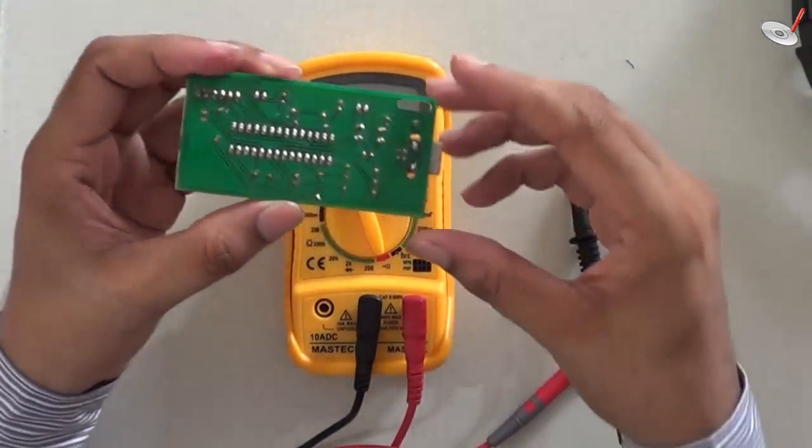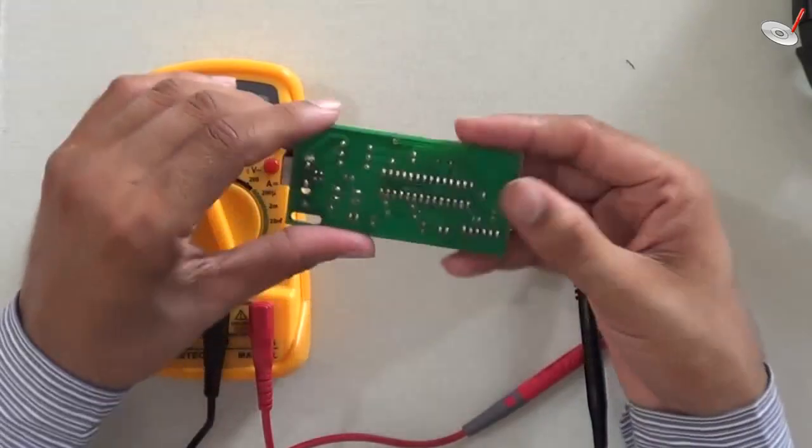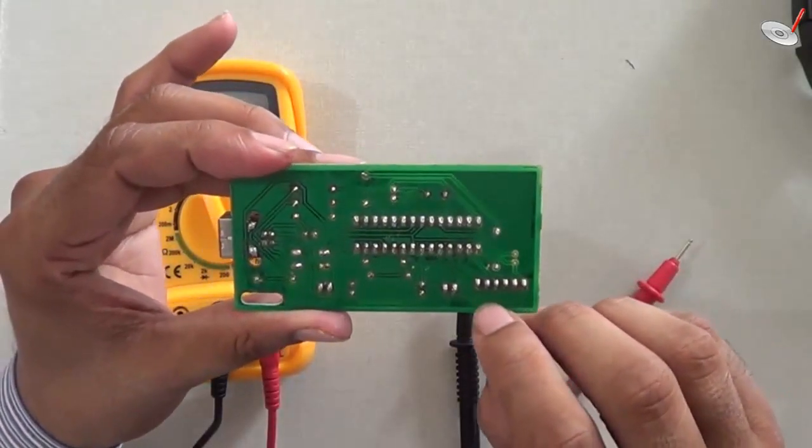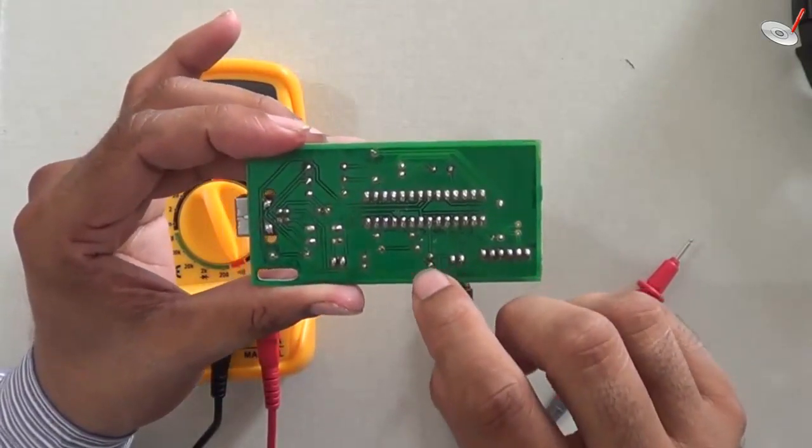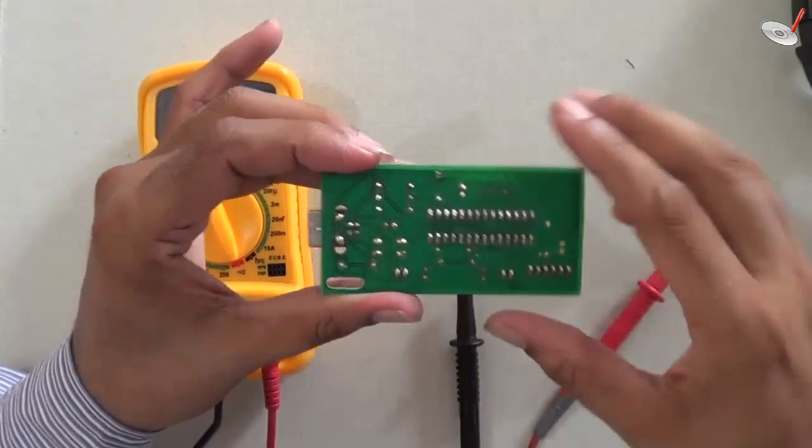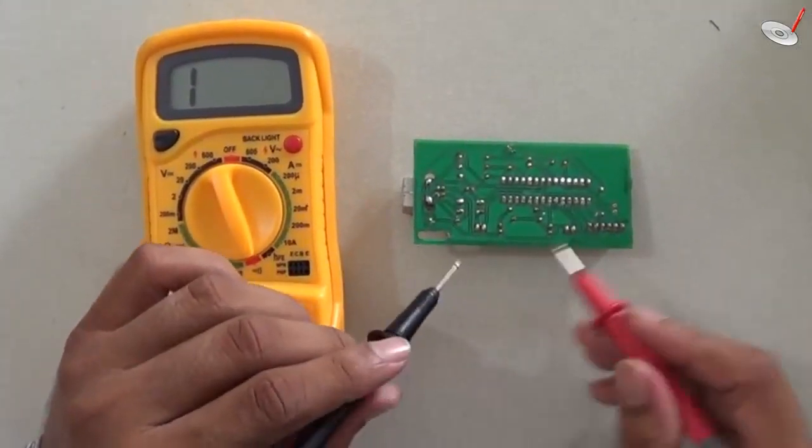If I have any PC board, then you can also check the continuity of this PC board. Here you can see this is the wire. This is going from here to there. So you can check the continuity at various points whether the wire is connected or not, or the connection is proper or not.